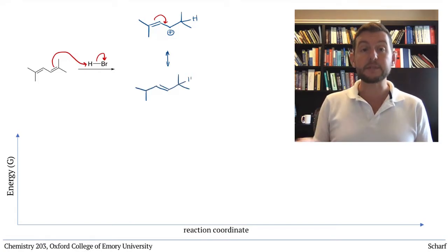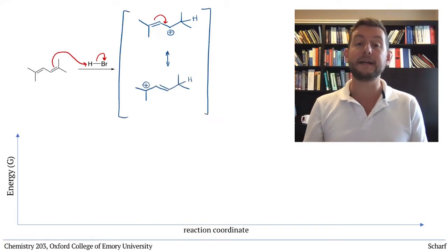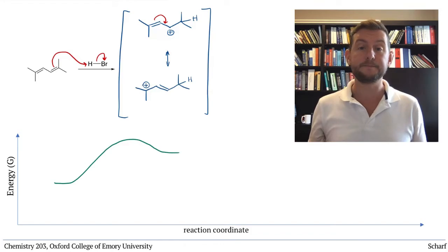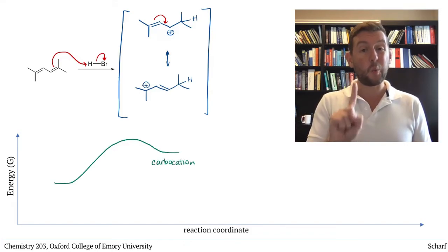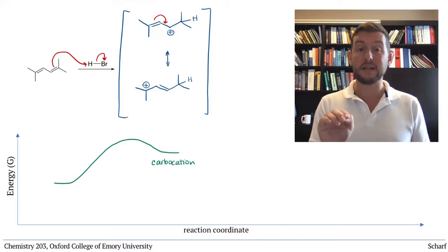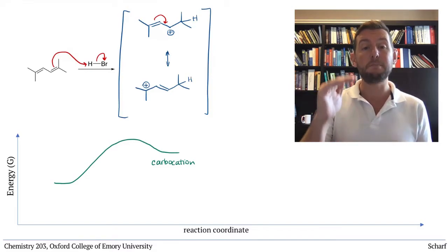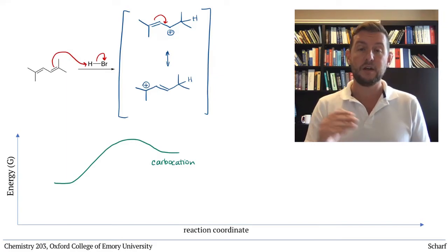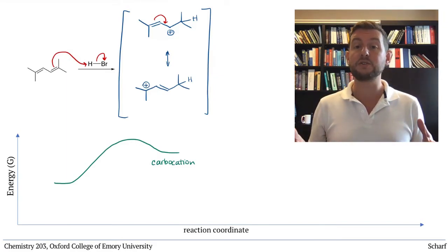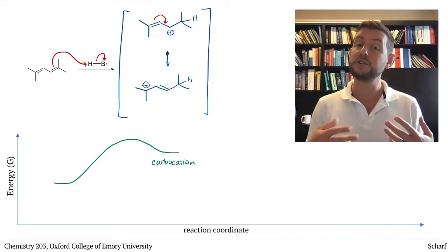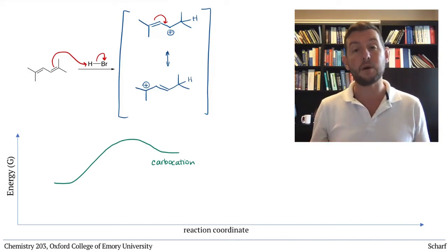This step is uphill, because carbocations are generally quite unstable. Note that I'm drawing just one carbocation intermediate here on the reaction coordinate, even though I've drawn both resonance structures. Resonance structures aren't actually different molecules, they're just two drawings of the same molecule.